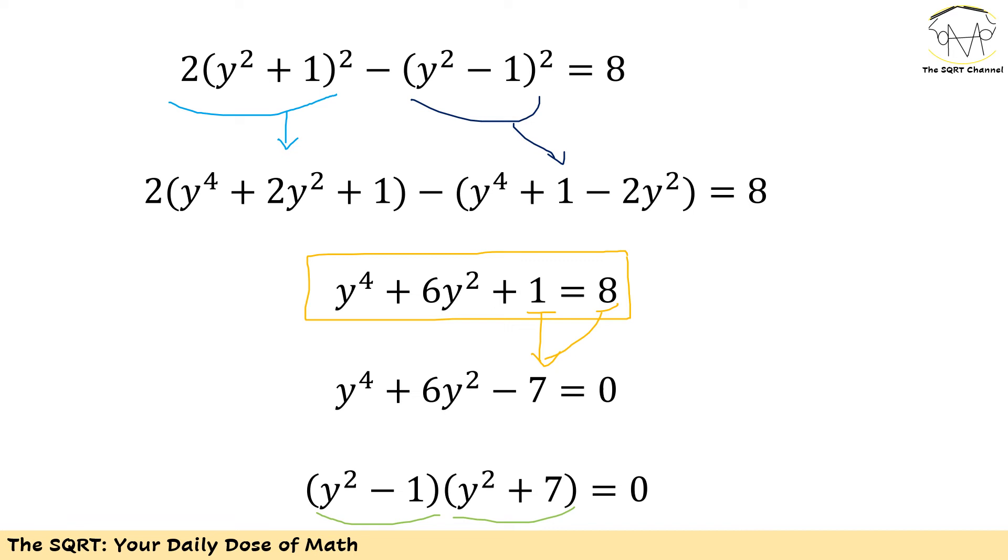Now let's see what we are going to get out of it. The first term can be 0, but the second term cannot be 0 in real numbers, so I will end up with having plus or minus 1 for y.